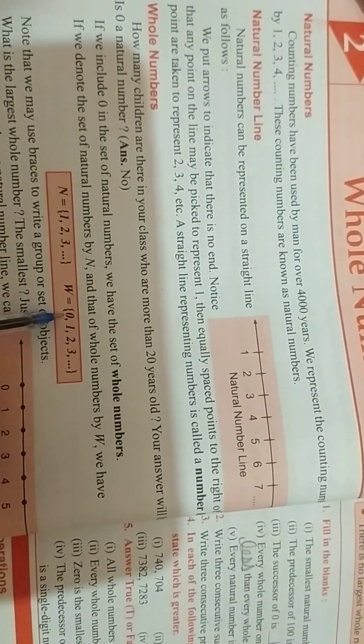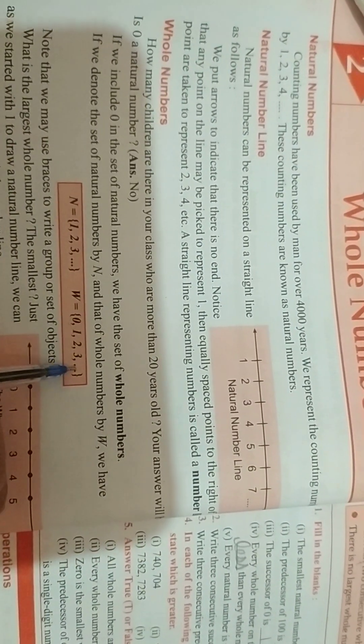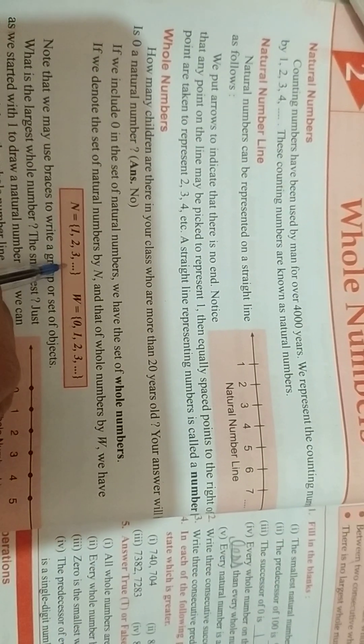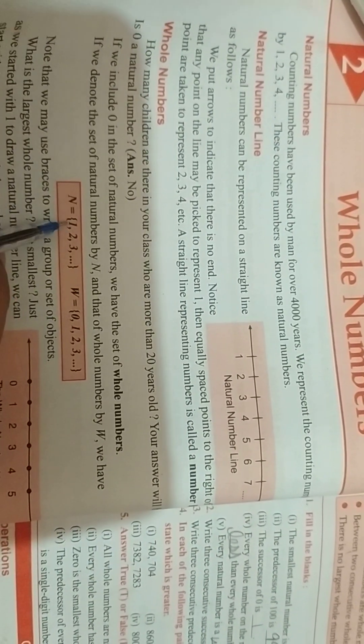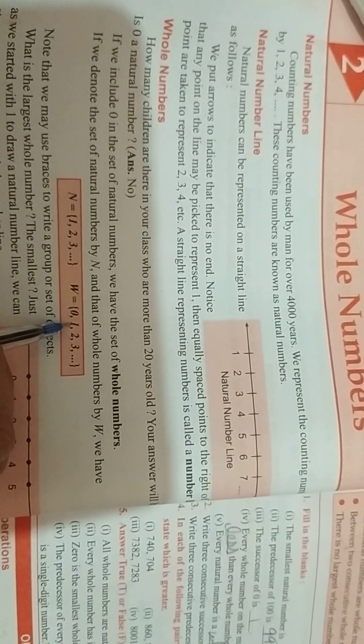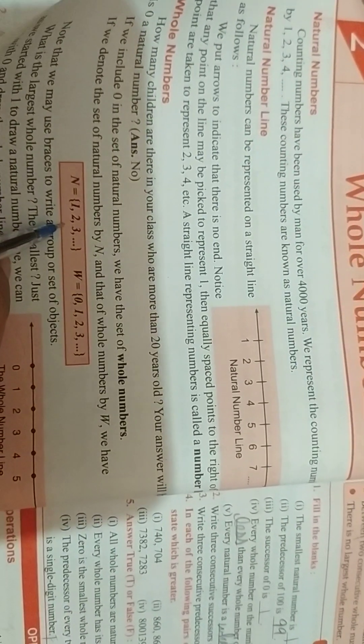But in the whole numbers we will start from 0. So whenever we will start from 0 then they are whole numbers and natural start from 1, 2, 3. So the difference between natural and whole is whole start from 0 and natural start from 1.